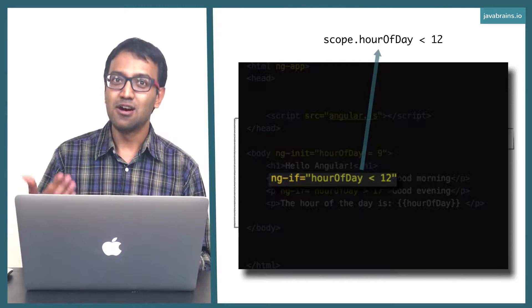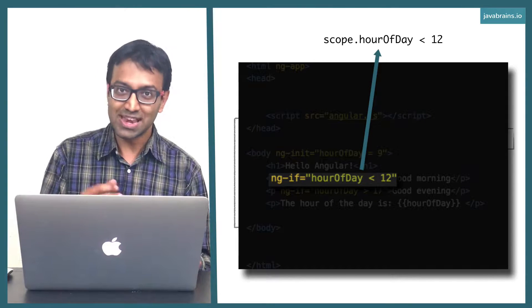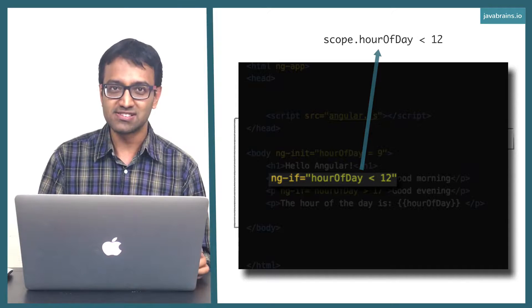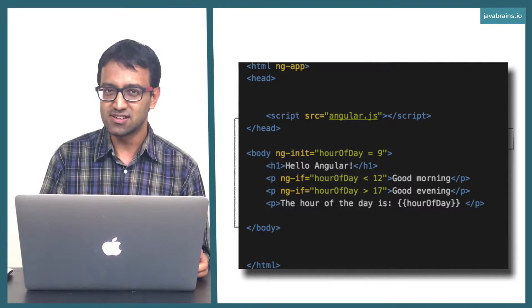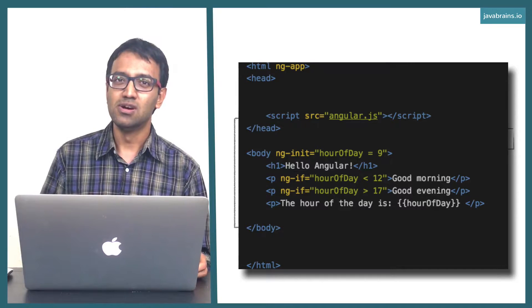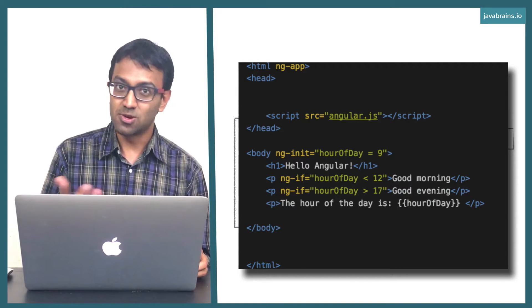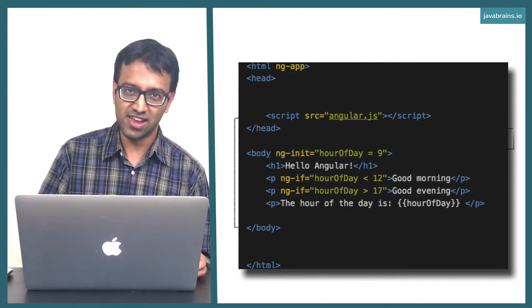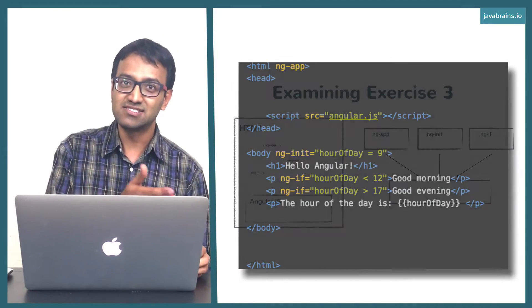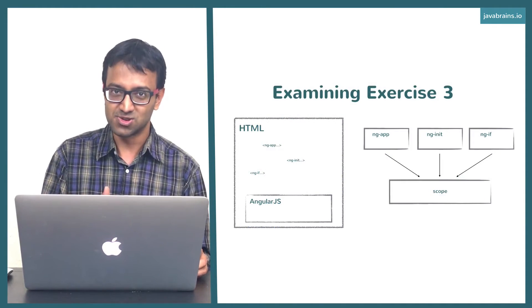It was actually reading a property from the scope object. So anytime you use a variable in any of these directives, in the expression of these directives, you're actually referring to a property of the scope. You don't have to say scope dot rOfD, you just have to say rOfD, and Angular automatically adds the scope dot in front of it and it refers to it.